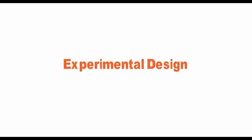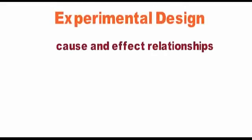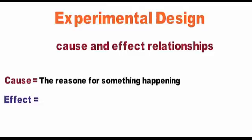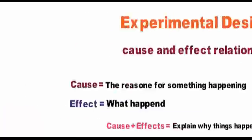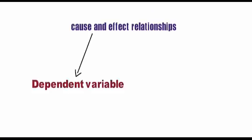Experimental design: this sort of design determines cause and effect relationships among various variables in such a way that the independent variable is changed in order to observe its effect on the dependent variable. For example: experiment with random assignment.